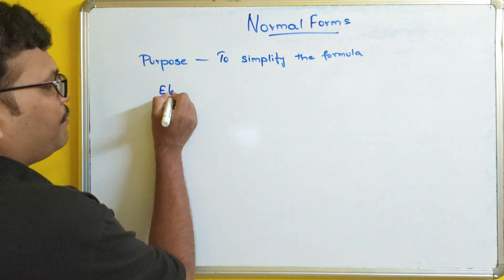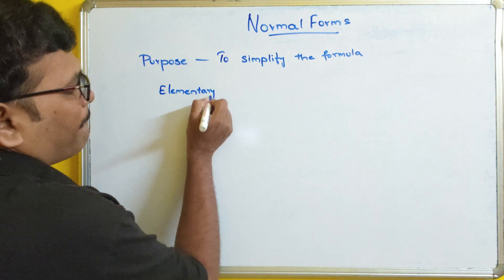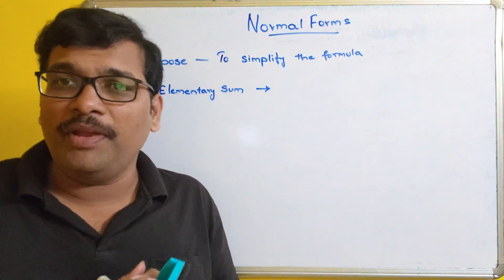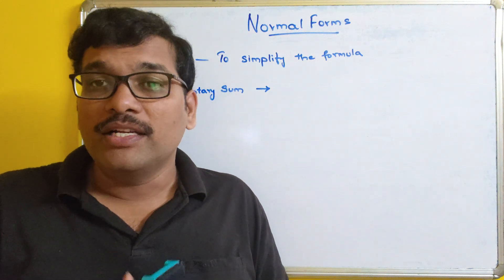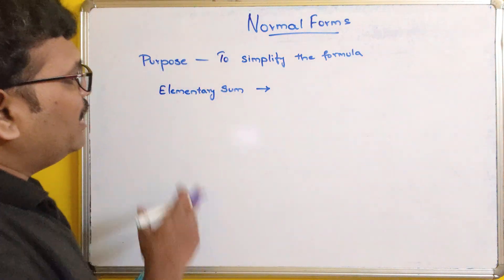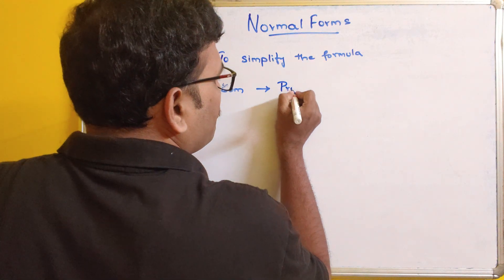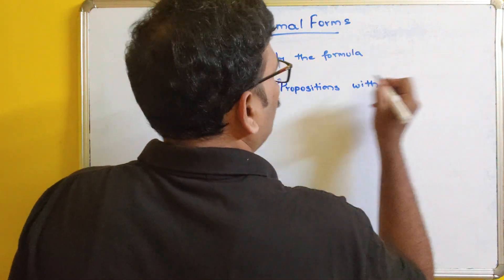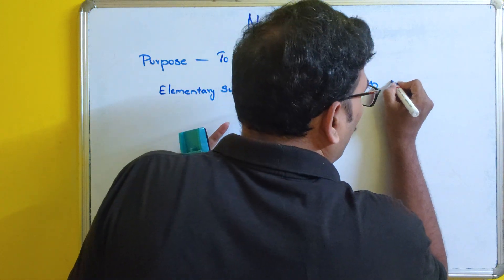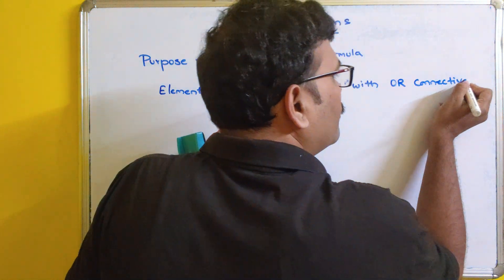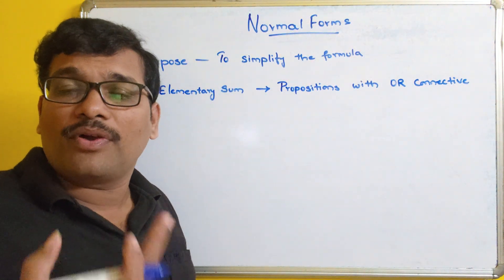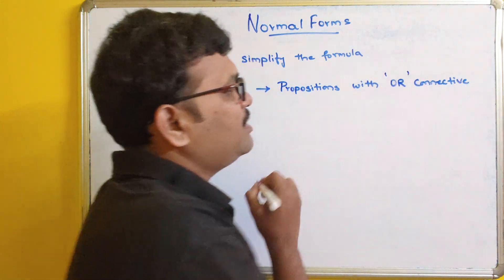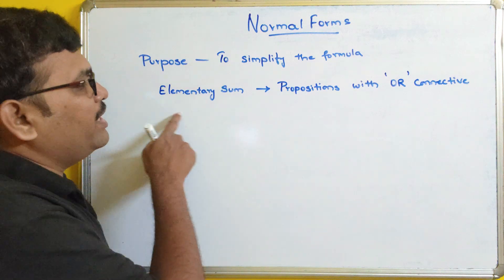The first concept is elementary sum. We know that propositions can be either simple or atomic, and compound or composite — where it will have some connectives. Here, elementary sum means the propositions connected with an OR connective, that means disjunction, are called elementary sum.